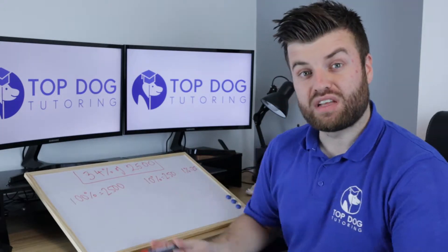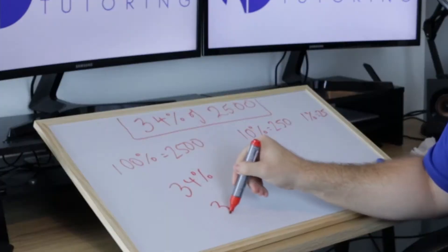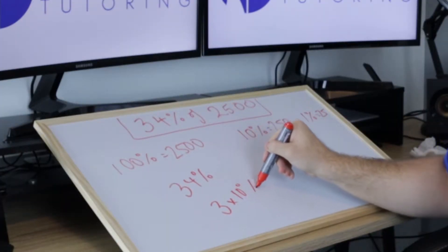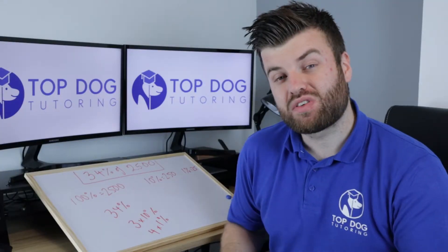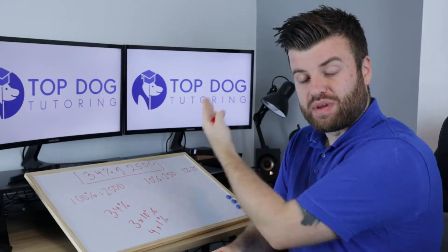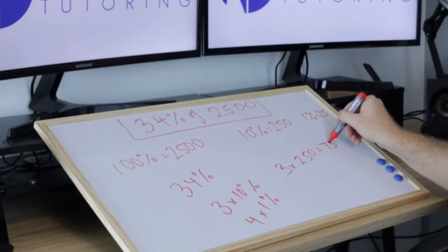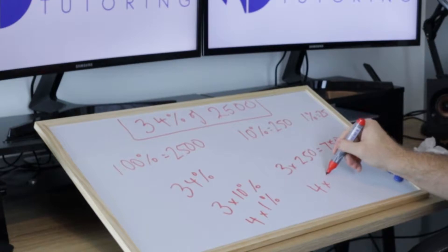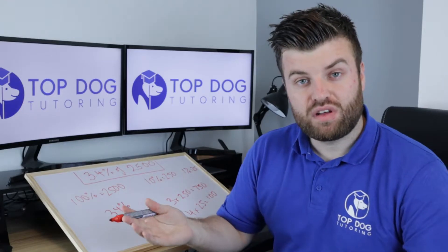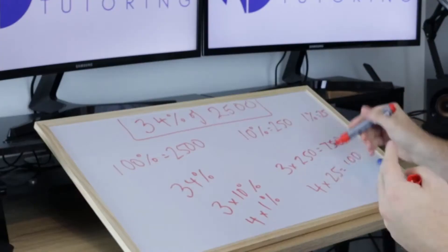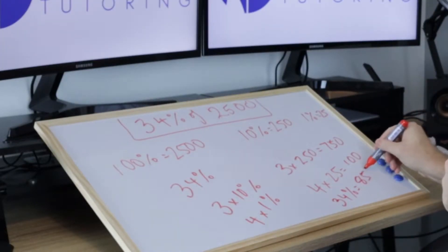In this example I have 34%. 34% is made up of 3 lots of 10% and 4 lots of 1%. Using my toolbox, I can do 3 multiplied by 250, which is 750, and 4 multiplied by 25, which is 100. Combining both answers, I know that 34% of 2,500 equals 850.